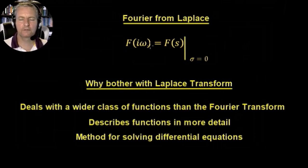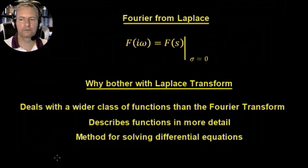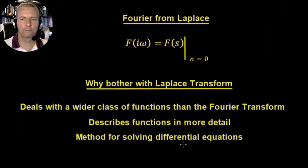A quick note before the example: we can form the Fourier transform from the Laplace transform by setting σ equal to 0 — that gets rid of the σ term, leaving just the iω term. Why bother with the Laplace transform rather than the Fourier transform? The Laplace transform deals with a wider class of functions; many functions that won't converge with the Fourier transform will converge with the Laplace transform. Also, most importantly, it's a method of solving differential equations: differentiation is equivalent to multiplication by s, and integration is equivalent to division by s.